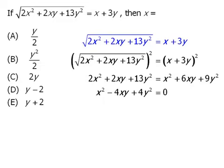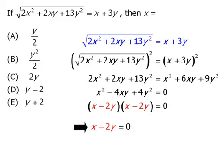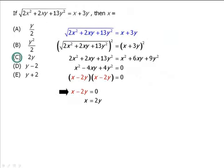From here we can factor this as follows. And from here we can conclude that x minus 2y must equal 0. So when we add 2y to both sides we get x equals 2y. So our answer is C.